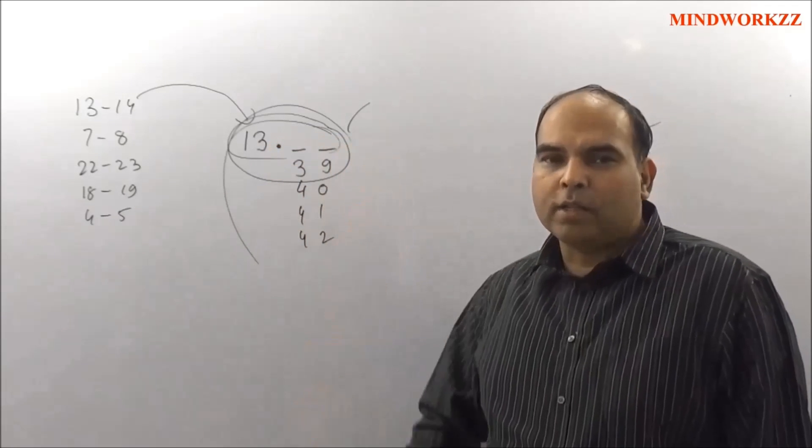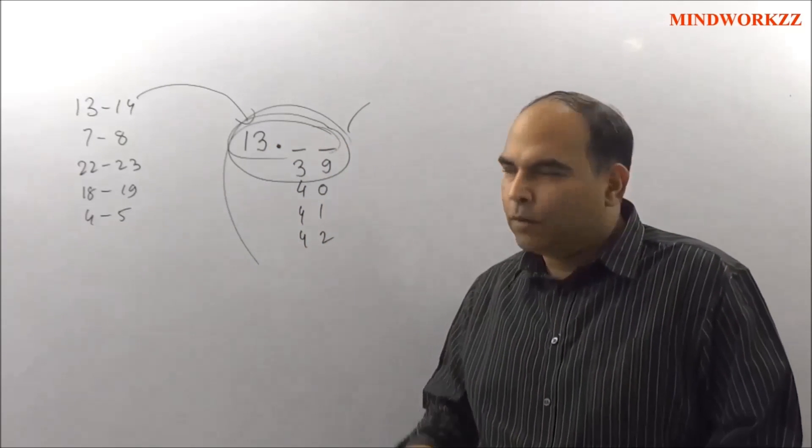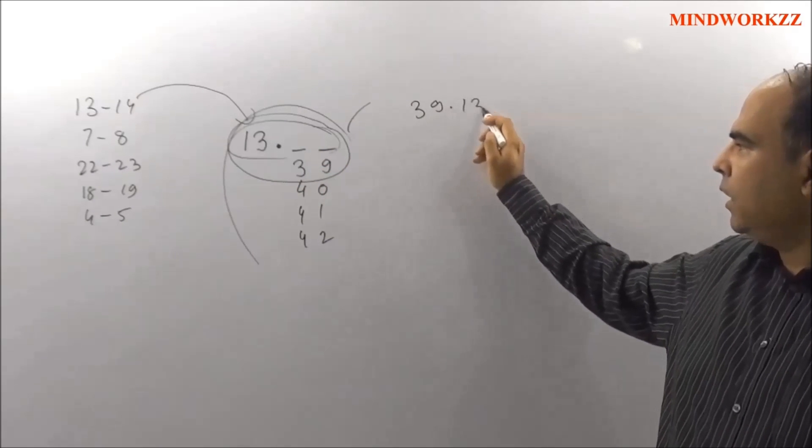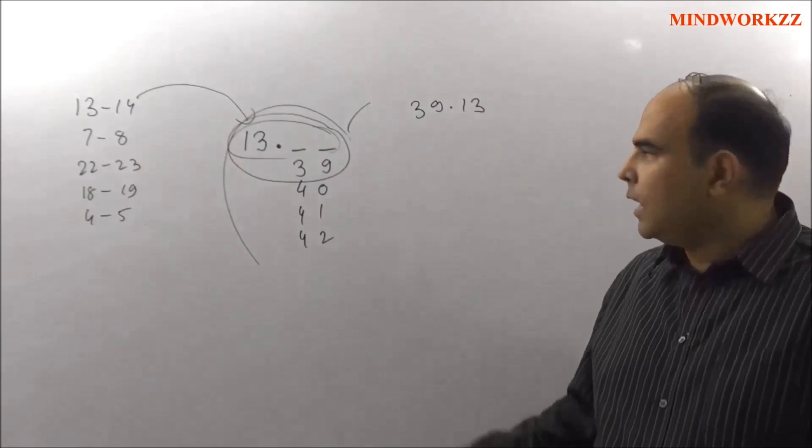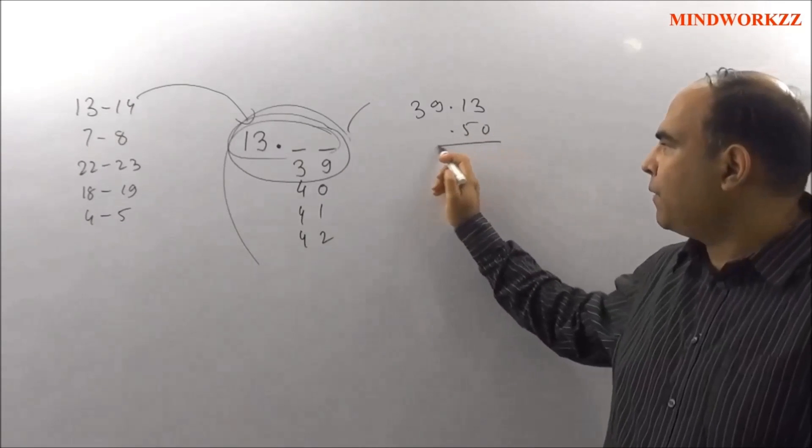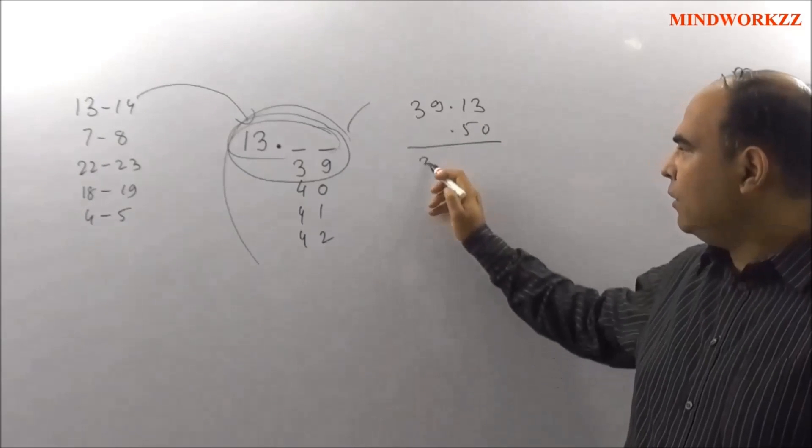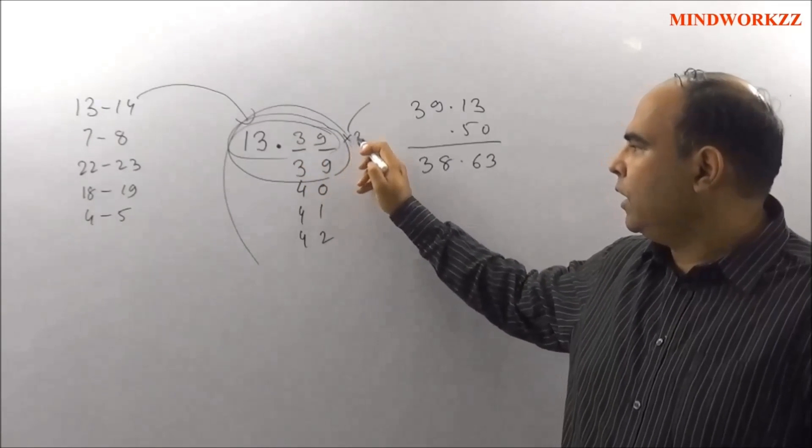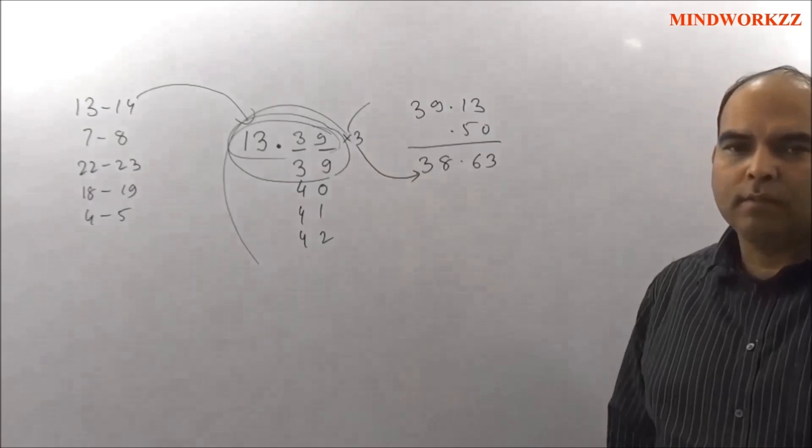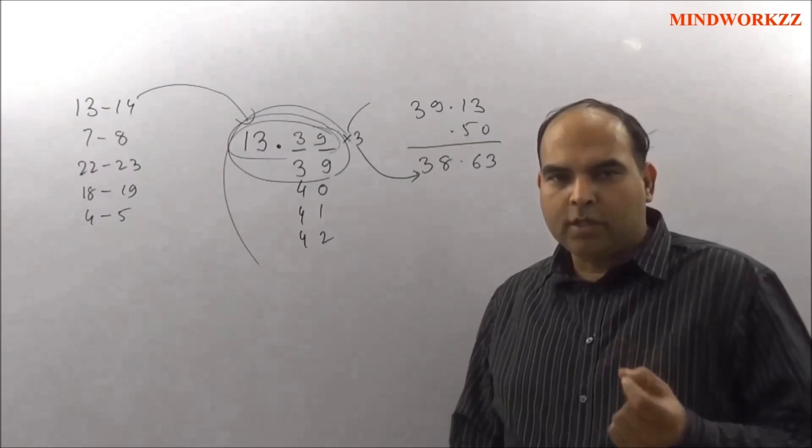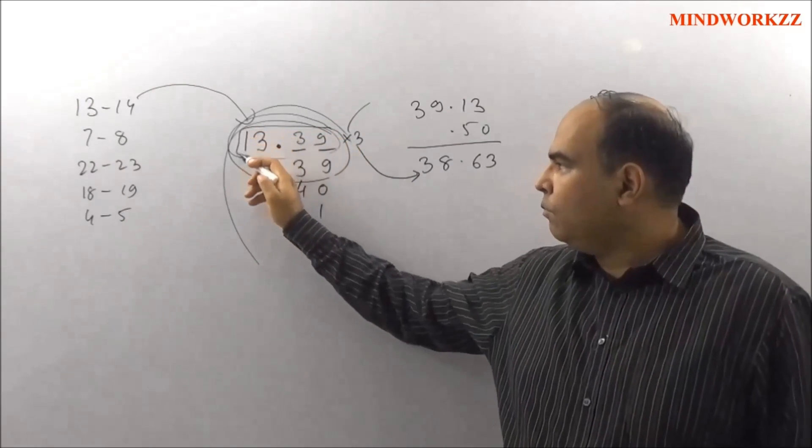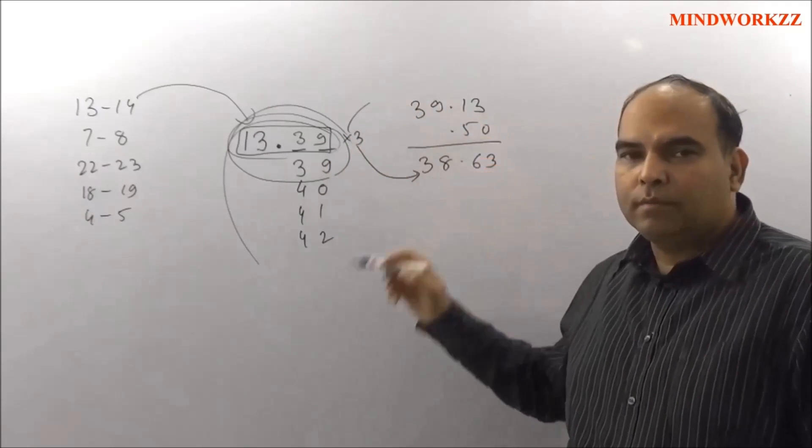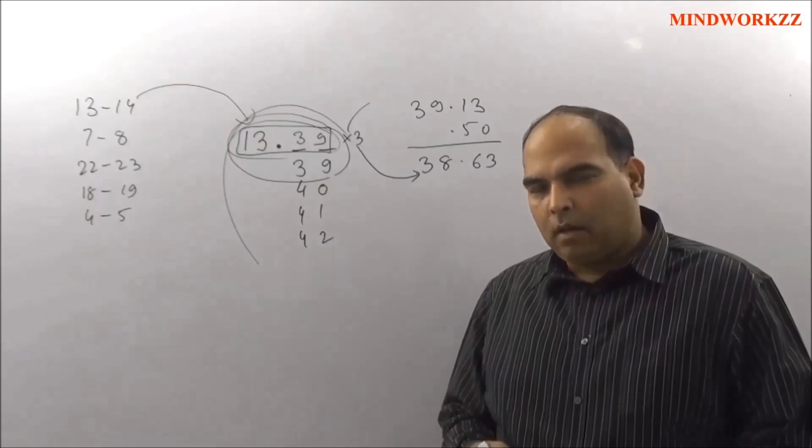So you start looking at 13.39. This becomes 39.13. And after spending 50 paise, which means 0.5 rupees, the ending value is 38.63. And you can clearly see that 13.39 into 3 does not give you this answer. The question says that the original value multiplied by 3 gave the same answer as this route.